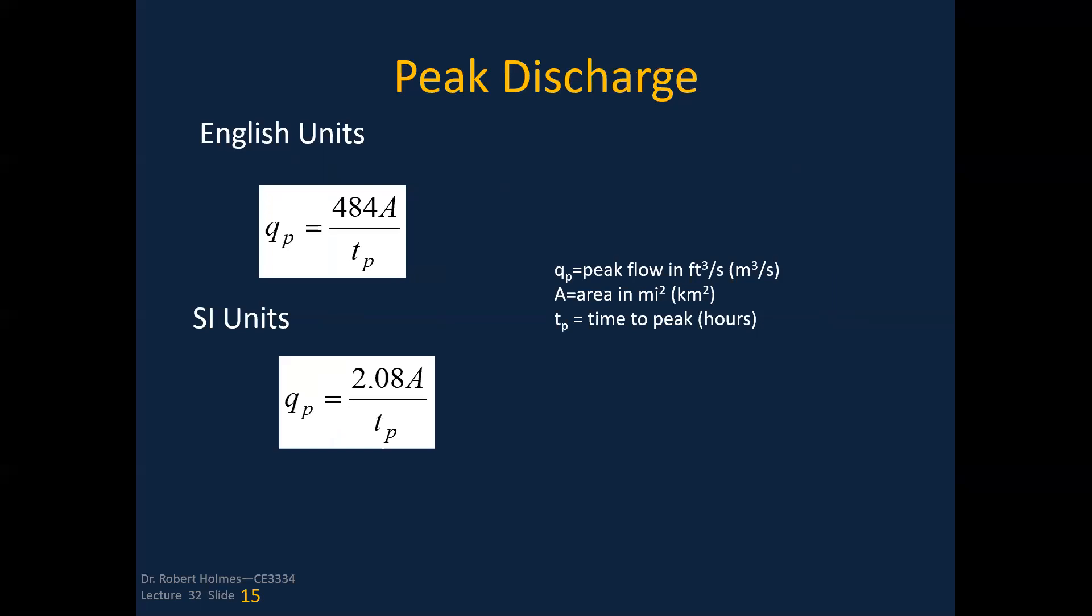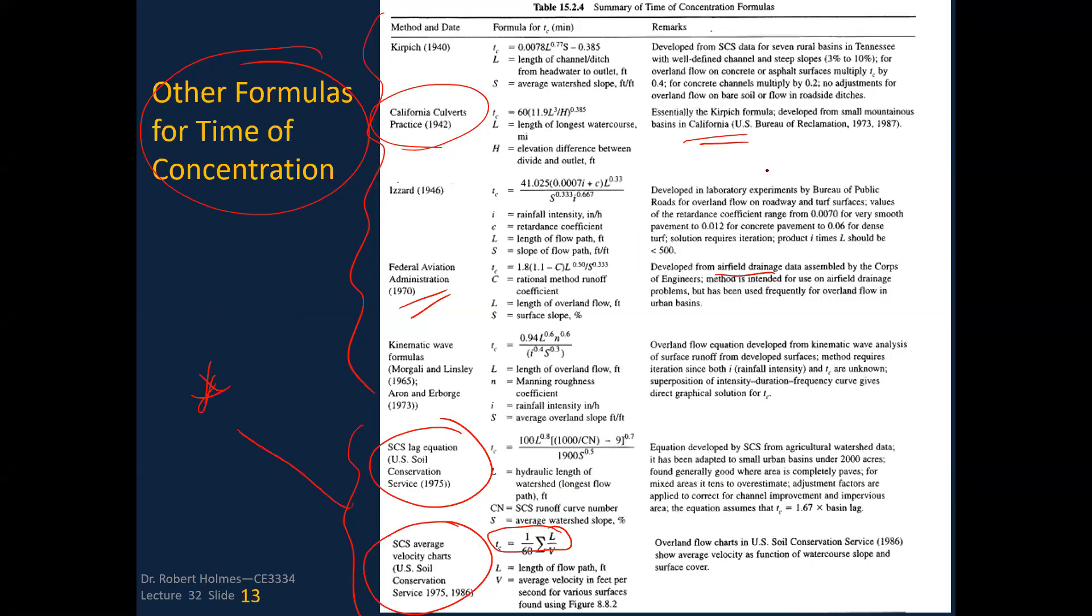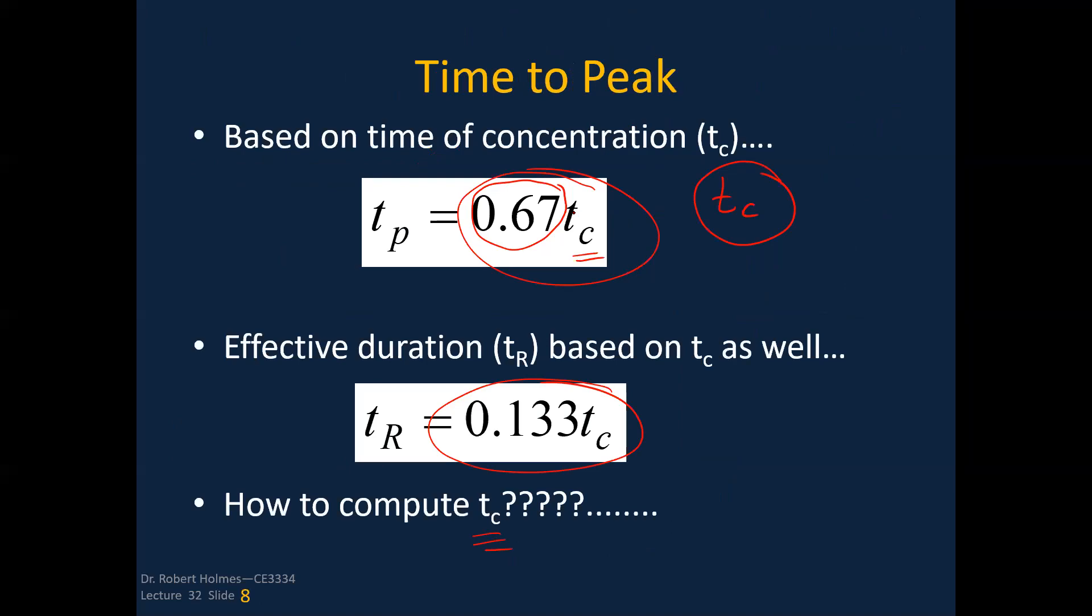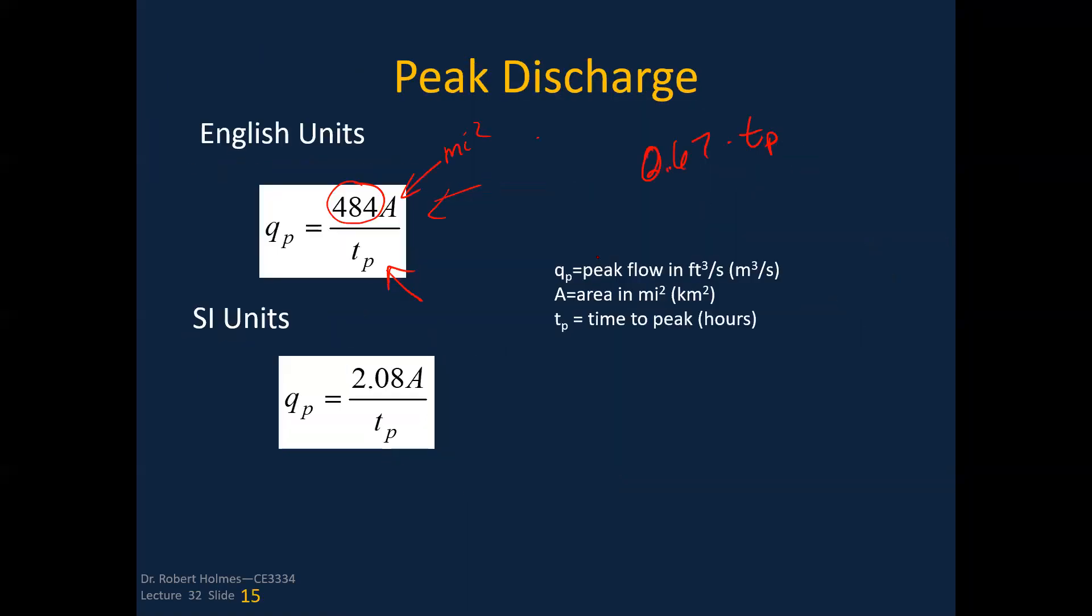The peak discharge is going to be equal to, in English units, 484 which is conversion times the area, which is going to be in square miles, and the time to peak, which is going to be in hours. You've got that from 0.67 times time of concentration. So you have everything you need to know to be able to calculate that Q_p. If you're in SI, you've got a slightly different equation based on the conversion and the fact that you've got this in kilometers squared.